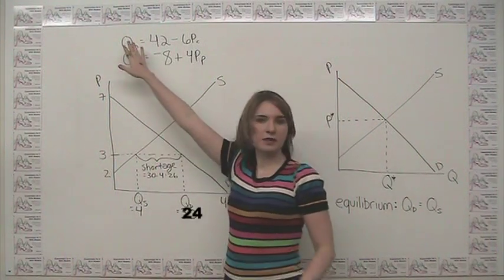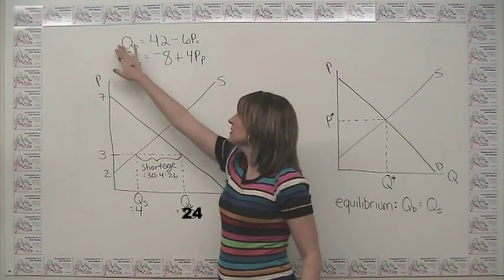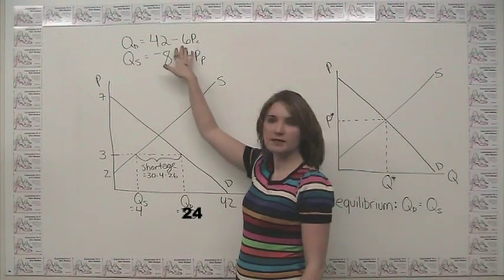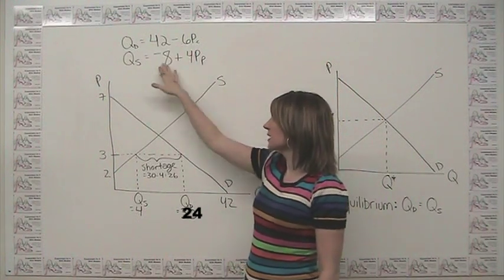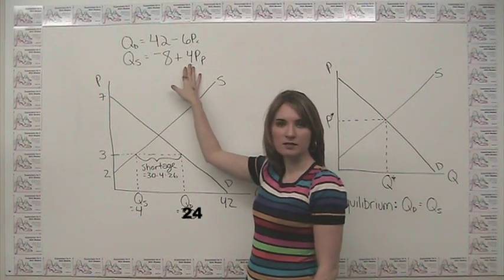Consider these equations here. We have quantity demanded equals 42 minus 6 times the consumer's price, and quantity supplied equals negative 8 plus 4 times what the producer gets.